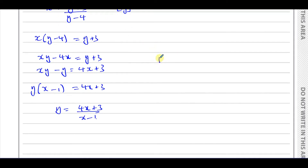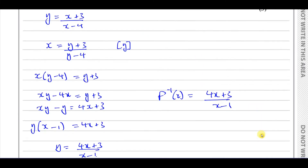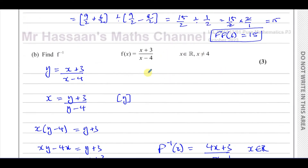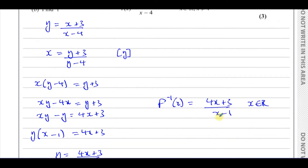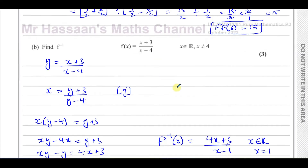So the inverse function is f⁻¹(x) = (4x + 3)/(x - 1). That would be the answer if they asked for an expression for the inverse function. However, since they say 'find the inverse function,' we must also state its domain: x is an element of the real numbers, and x cannot equal 1, because that's the asymptote that makes the denominator zero.